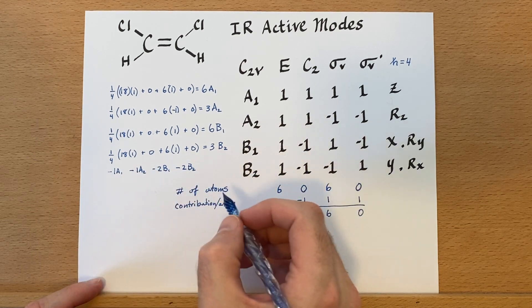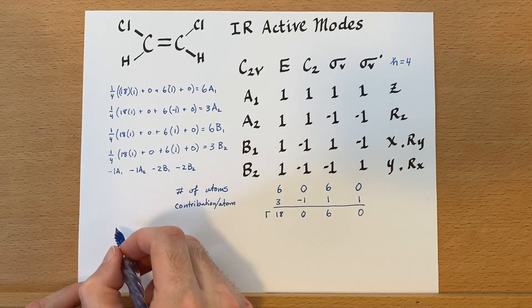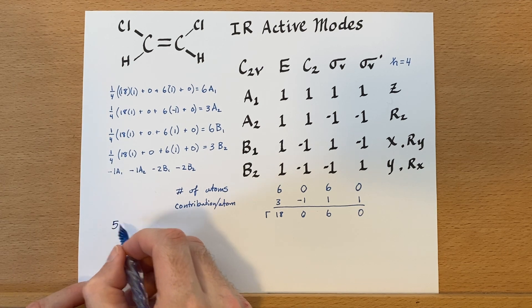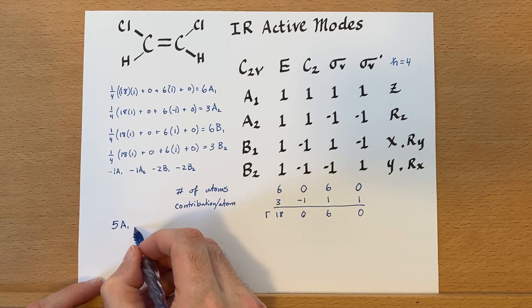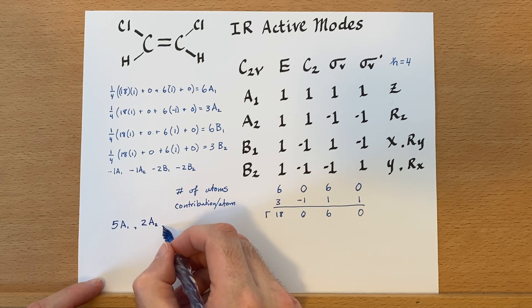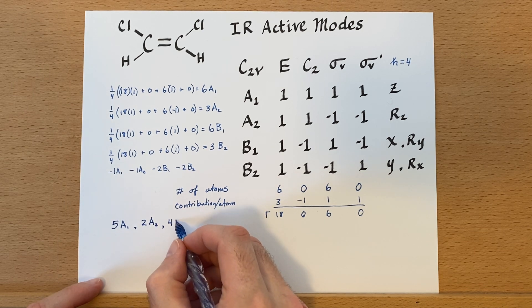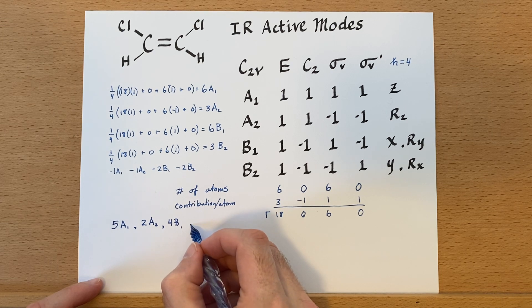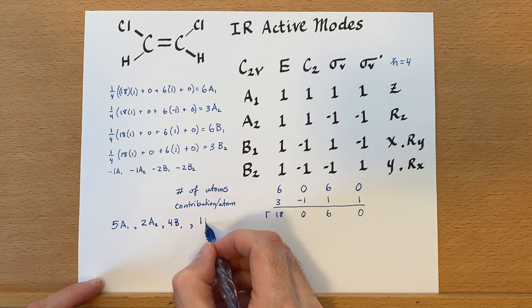If we subtract these out, we will be left with five A1s, two A2s, four B1s, and one B2.